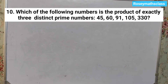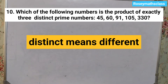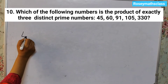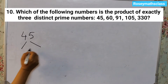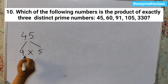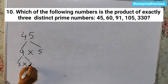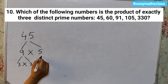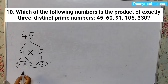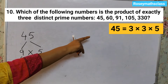Question number 10: which of the following numbers is the product of exactly 3 distinct prime numbers? Five numbers are given and we need to find out which number is the product of exactly 3 different prime numbers. First number is 45. 45 we can write as 9 into 5, and 9 can be written as 3 into 3. So 45 is 3 into 3 into 5. But here 3 is repeated, so it does not have 3 distinct prime factors.